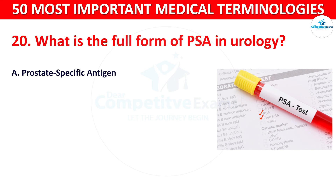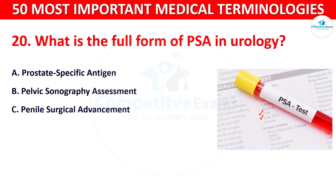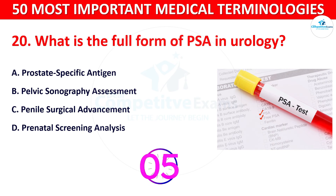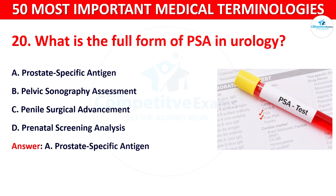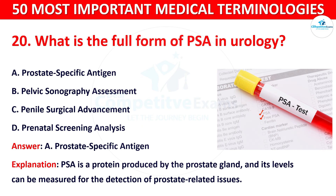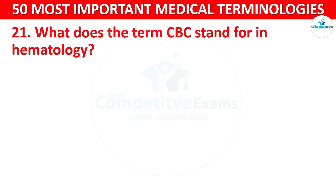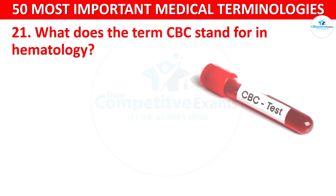Question number 20: What is the full form of PSA in urology? The options are: A) Prostate Specific Antigen, B) Pelvic Sonography Assessment, C) Penile Surgical Advancement, or D) Prenatal Screening Analysis. The correct answer is Prostate Specific Antigen. PSA is a protein produced by the prostate gland, and its levels can be measured for the detection of prostate-related issues.